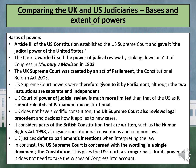This section also looks at the protection of rights and constitutional interpretation, starting with the base of their powers. Article 3 of the US Constitution establishes the US Supreme Court and gives it the judicial power of the United States. The court awarded itself the power of judicial review by striking down an act of Congress in Marbury v. Madison in 1803. The UK Supreme Court was created by the Constitutional Reform Act of 2005, so its powers were given to it by Parliament, although the two institutions are separate and independent. The UK Court's power of judicial review is much more limited, as it cannot rule acts of Parliament unconstitutional, and the UK does not have a codified constitution. The UK Supreme Court also reviews legal precedent and decides how to apply it to new cases.